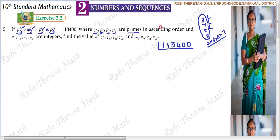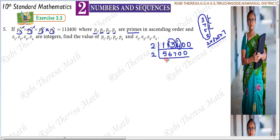So, even number — divide by 2. 2 fives are 10, remainder 1. 13, update. 2 sixes are 12, remainder 1. 14 update. 2 sevens are 14, remainder 0. Again 2 table — 2 twos are 4, remainder 1. So 16. 2 eights are 16. 2 threes are 6, remainder 1. 10 update. 2 fives are 10, so this is 0 update.